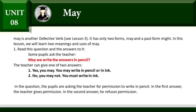May is another defective verb. It has only two forms: may and a past form, might. In this lesson, we will learn two meanings and uses of May. May's main past form is might.